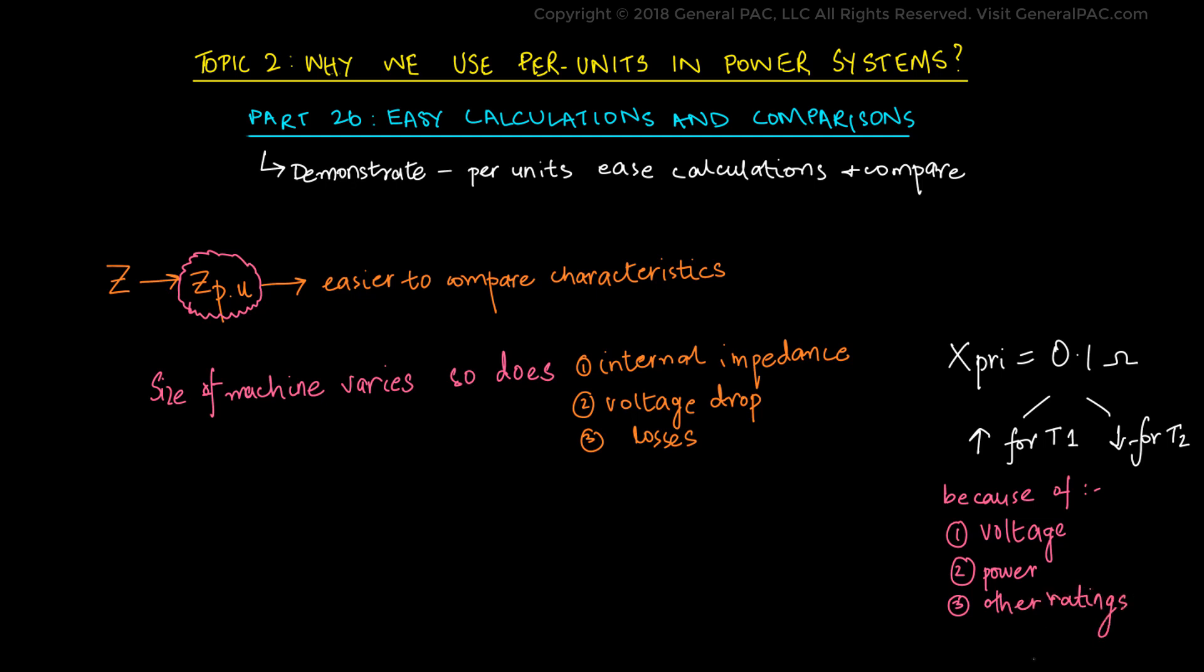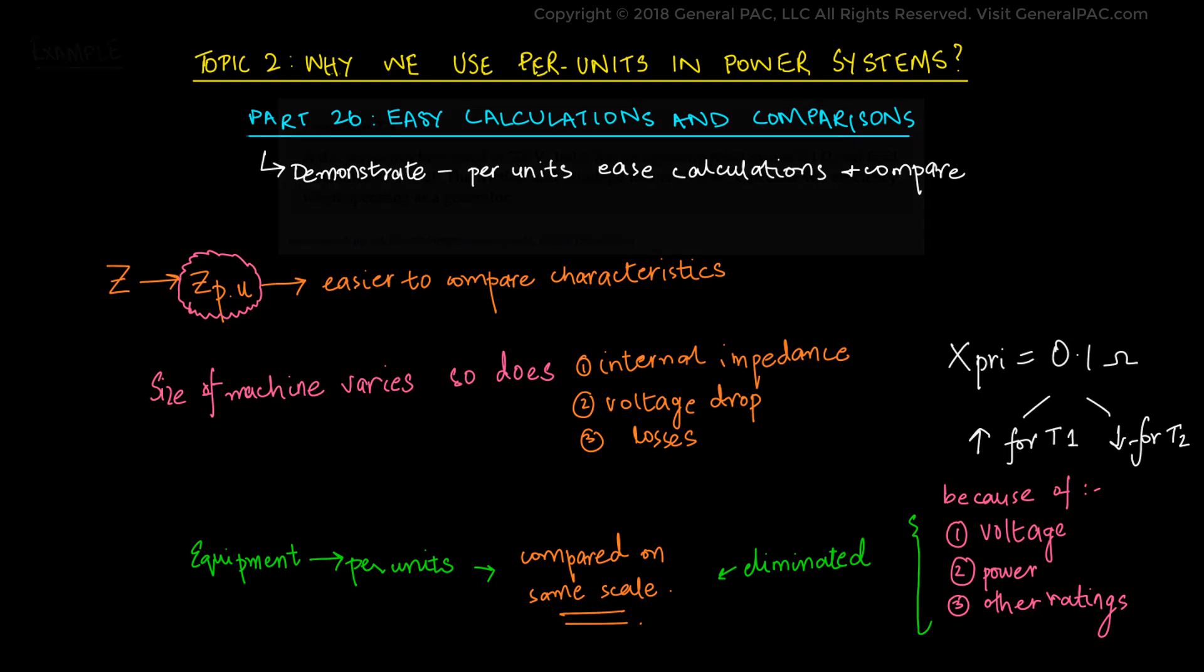However, if that equipment, whether it be a machine, transformer, generator, capacitor bank, etc., would have its electrical quantities converted into per unit values, the different voltage drop and levels disappear and the impedance can be compared over the same scale. This is a huge advantage of using per units in power systems.